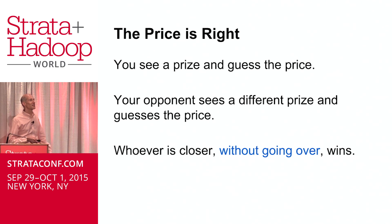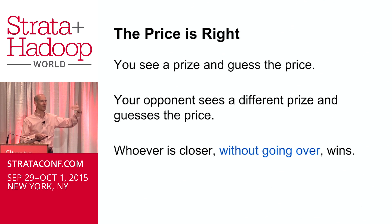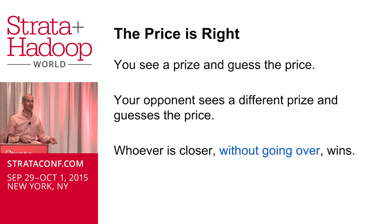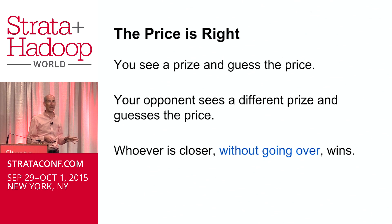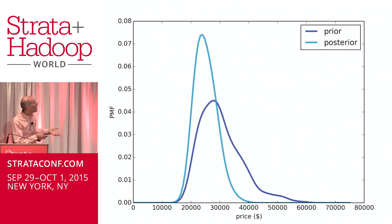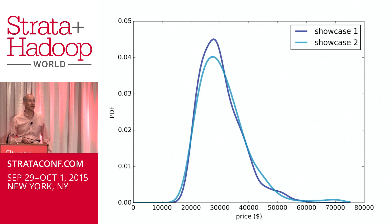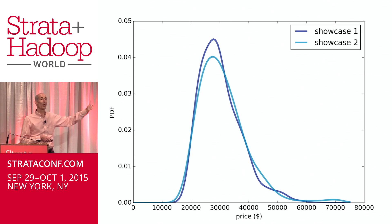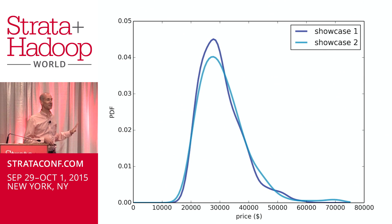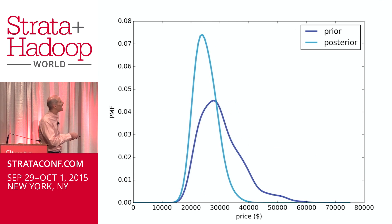One more example that's a little more fun: if you're ever on The Price Is Right, at the end of the show you have the showdown. They show you a prize, you have to guess the price, then your opponent guesses a price for their prize, and whoever is closest without going over wins. I love this example because the reward function is asymmetric and has a sharp cutoff, so it doesn't lend itself to analytical methods. But with computational methods it's very straightforward. Watch the show for a couple of years — someone has done this and recorded the price of all prizes. Those are your priors. When you see the prize, you use your estimate as a noisy measurement to do an update.